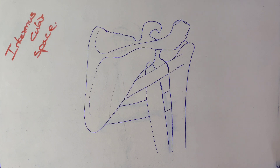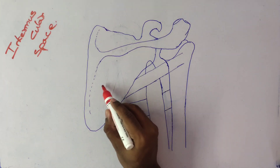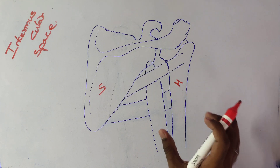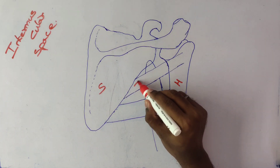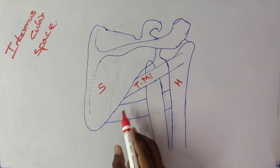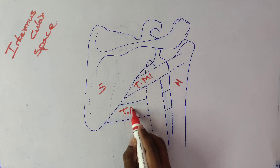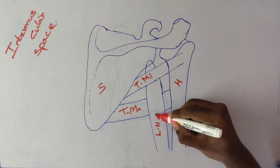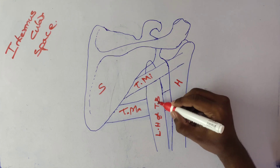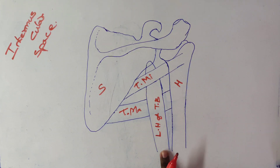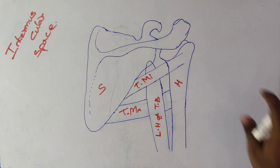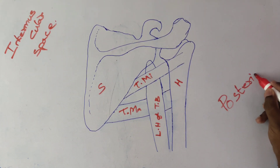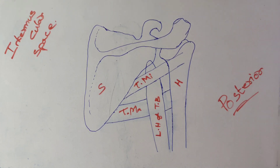In the intermuscular space, the contents involved are: first, the scapula, and second, the humerus — these two bones are involved. Next, there is teres minor muscle, teres major muscle, and the long head of triceps. These three muscles are involved. This is a posterior view, as available in our textbook.